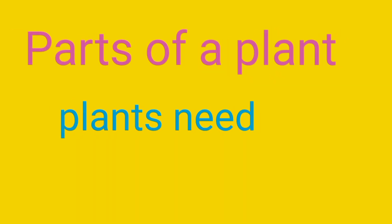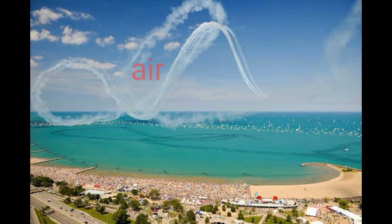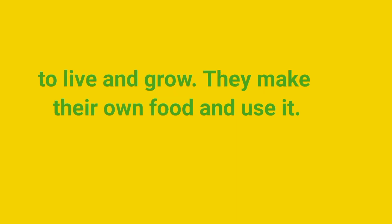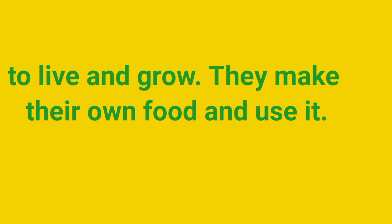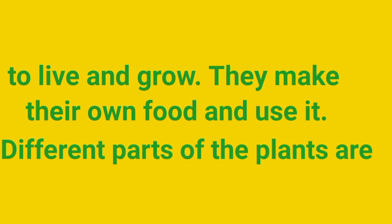Parts of a plant. Plants need water, air and sunlight to live and grow. They make their own food and use it.